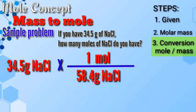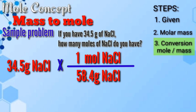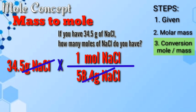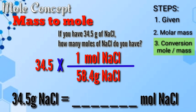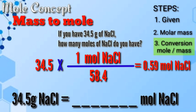For our mass-to-mole conversion, write 1 mole of NaCl at the top. That is, 1 mole of NaCl is to 58.5 grams of NaCl. We can now cancel out grams of NaCl, leaving the unit mole of NaCl. Calculate: 34.5 grams of NaCl times 1 mole of NaCl divided by 58.4 grams of NaCl equals 0.59 mole of NaCl. Therefore, if you have 34.5 grams of NaCl, you have 0.59 mole of NaCl.